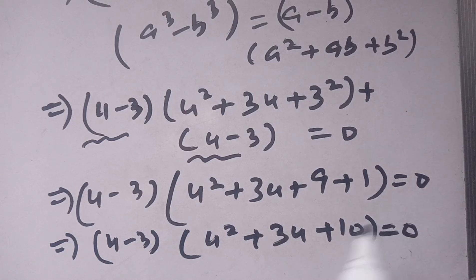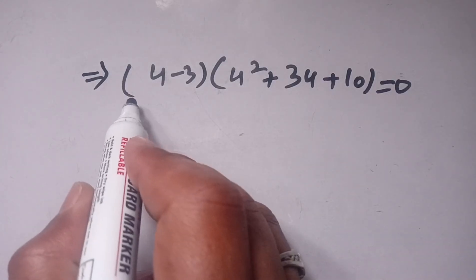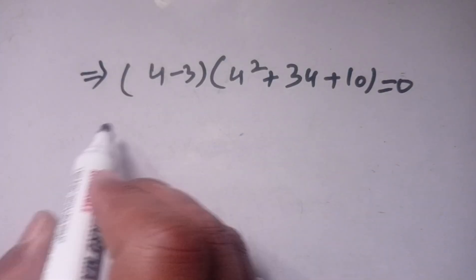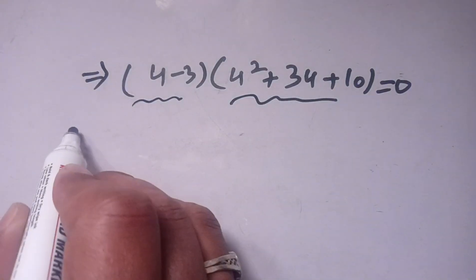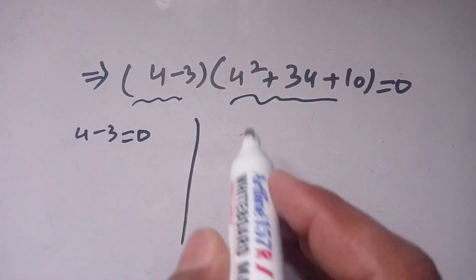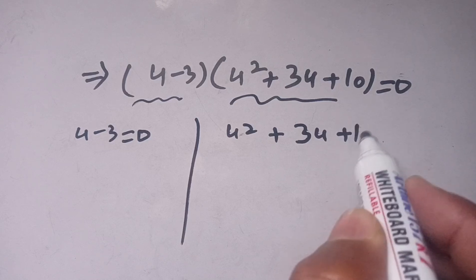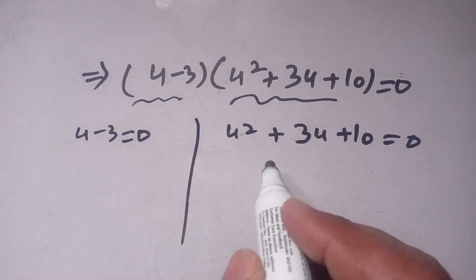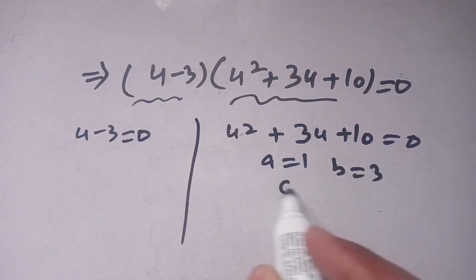We have two factors: u minus 3 equals 0, and u squared plus 3u plus 10 equals 0. For the quadratic, a equals 1, b equals 3, and c equals 10.